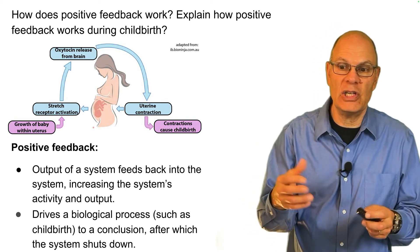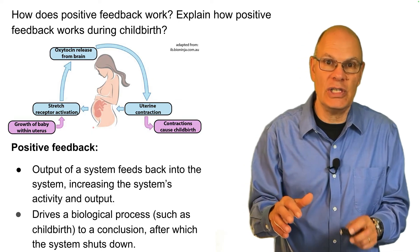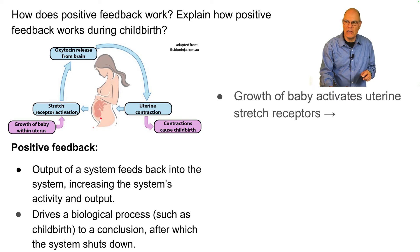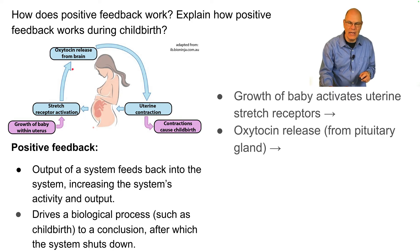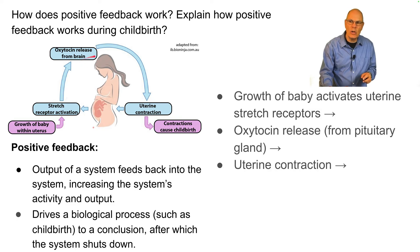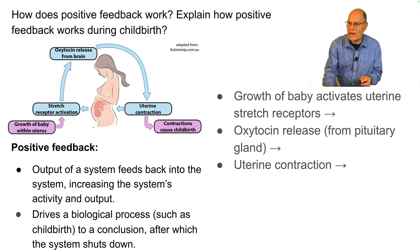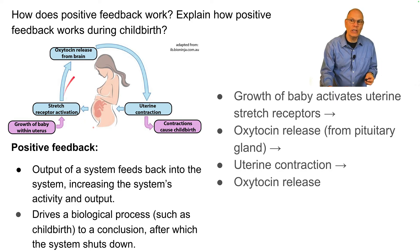In childbirth, the growth of a baby activates uterine stretch receptors. The uterus is essentially a big muscle, and when stretched it sends messages to the brain. The brain releases the hormone oxytocin, which circulates in the blood. When oxytocin is picked up by receptors in uterine cells, it leads to more contraction, which leads to more oxytocin release. This cycle continues, amplifying itself, until the baby is born.